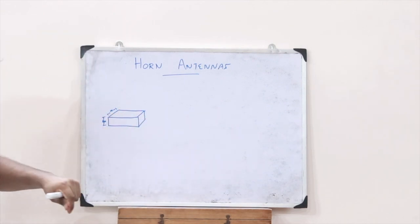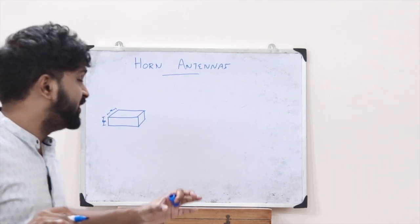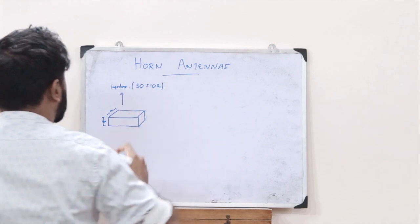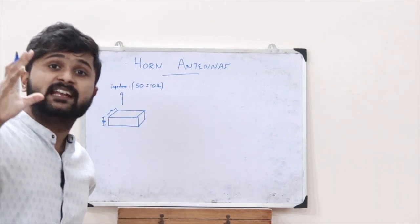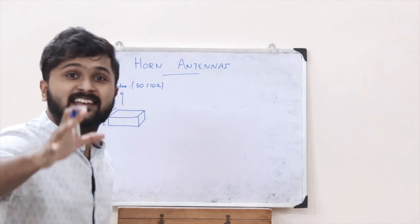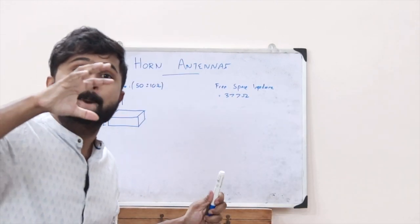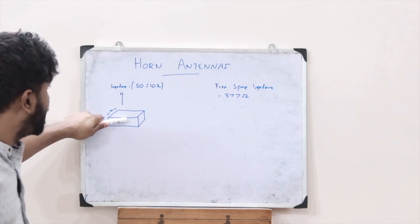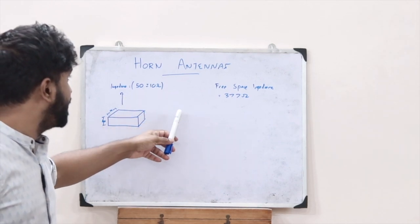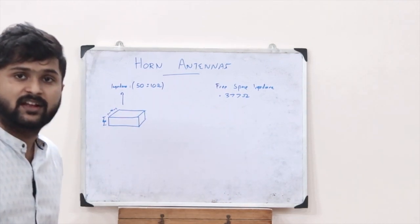Let us consider the following waveguide with dimensions A and B. The impedance value of a waveguide is given as 50 plus or minus 10 ohms. But the free space impedance around this waveguide is given as 377 ohms. Therefore we find a mismatch in impedance between the waveguide and free space, and the signals will not radiate from the waveguide onto the free space outside.